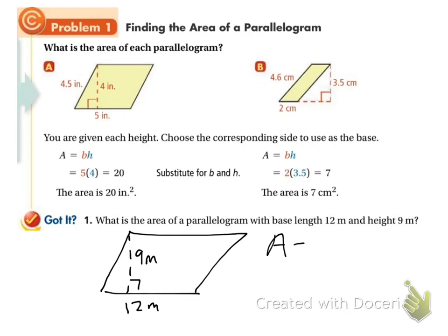So A equals bh. And I'm going to plug in 12 for my base and 9 for my height. 12 times 9 gives me 108. So our area is 108, and use units if they give it to you. So this is meters. If we're talking area, this is square meters, or meters squared.